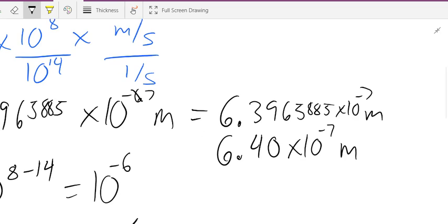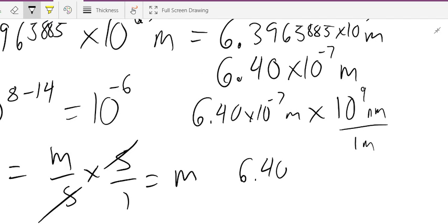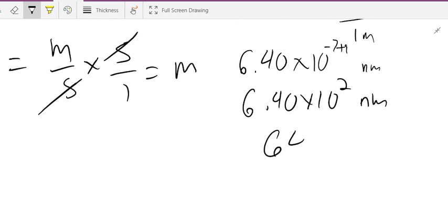Now, if I want to put this in nanometers, so I have a better understanding, I can say 6.40 times 10 to the negative 7th meters times 10 to the negative 9th nanometers in 1 meter. So, there are 10 to the 9th nanometers in 1 meter, which means we have 6.40 times 10 to the negative 7th plus 9 nanometers, which is going to equal 6.40 times 10 to the 2nd nanometers, which equals 640 nanometers.